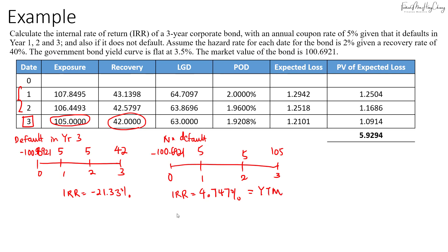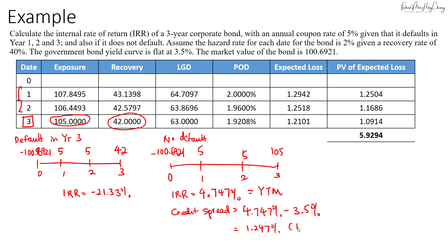So the IRR of four point seven four seven percent is what we call the yield to maturity of the risky bond. If you're asked to calculate the credit spread, it equals the YTM of the bond minus the risk-free rate of three point five percent, giving one point two four seven percent, or about one hundred and twenty-five basis points. That's the credit spread of this bond.